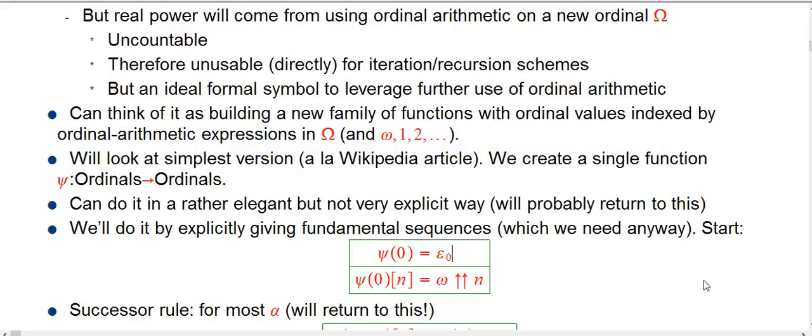What I'm going to do is define it by explicitly giving fundamental sequences. Every time I define ψ of a new bigger ordinal, I'm going to say it's the limit of this very particular fundamental sequence. We'll start with ψ(0) = ε₀. You can start with lower ordinals if you want, but we might as well start here because everything below is straightforward with ordinal arithmetic. The nth term in the fundamental sequence leading up to ψ(0) is just omega double up n: when n=1 it's omega, n=2 is ω^ω, n=3 is ω^ω^ω.